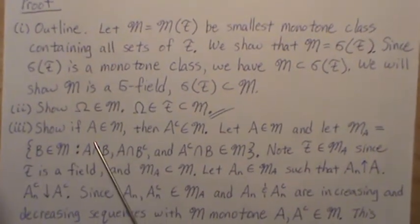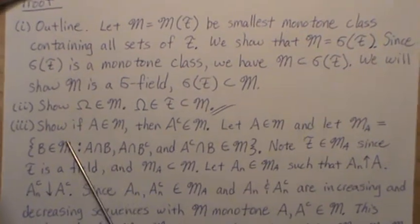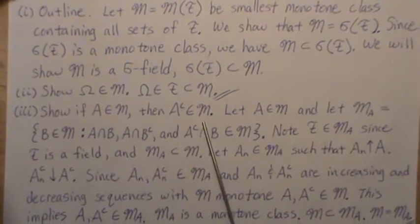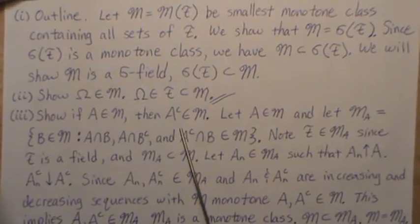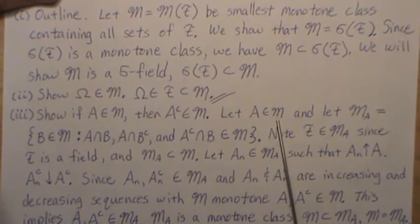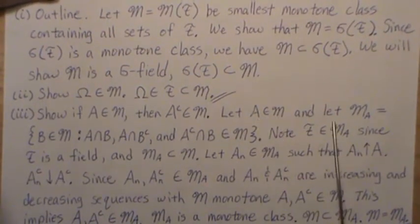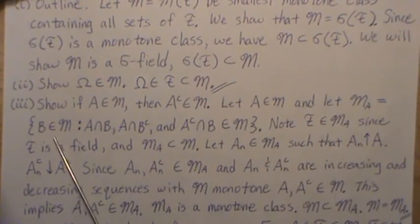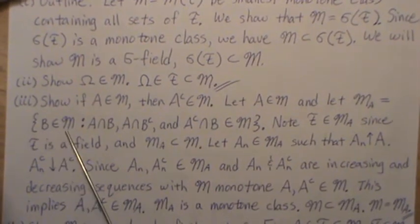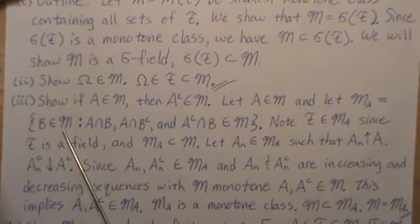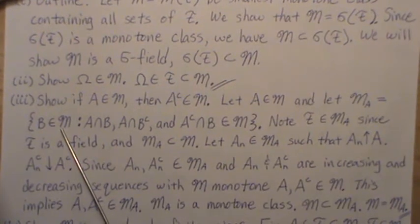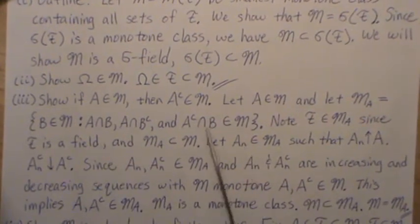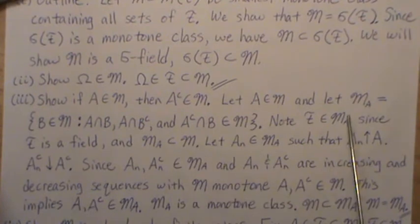Part two: we're going to show M is closed under complements — that if A is in M then Aᶜ is in M. Let A be any set in M, and define a new class M(A) to be all sets B in M such that A ∩ B and A ∩ Bᶜ are in M. Then B is in M(A).